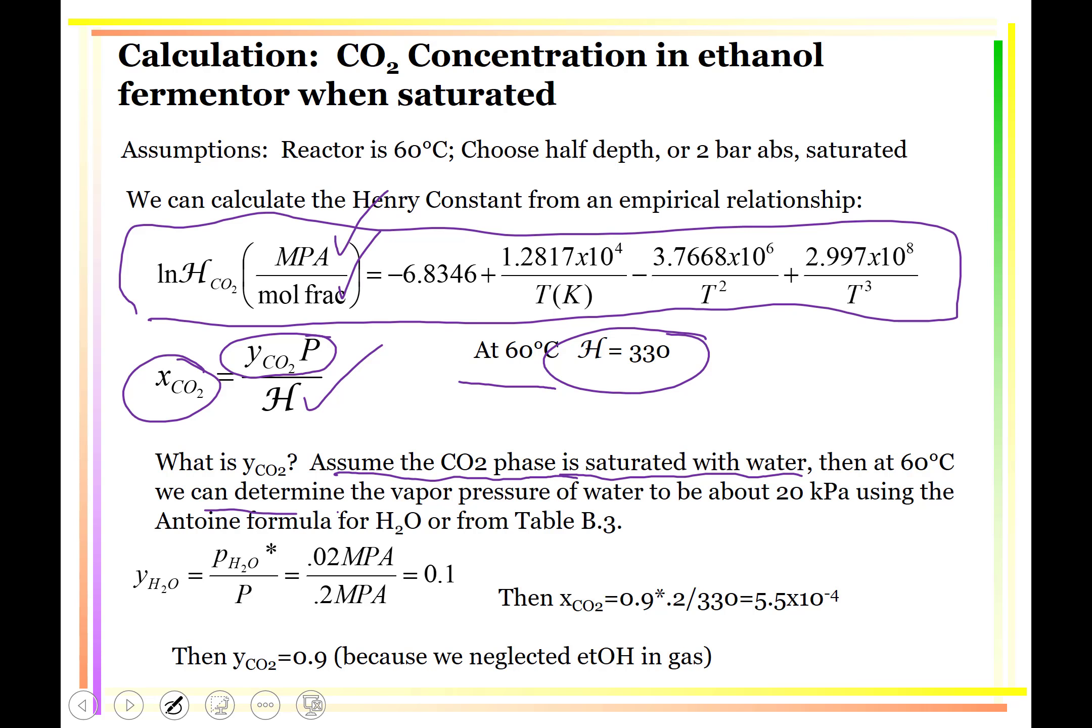At 60 degrees C, we can determine the vapor pressure of water to be about 20 kilopascals using our Antoine equation. So that means the mole fraction of water is going to be P star of water divided by P.